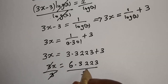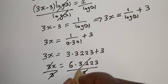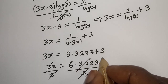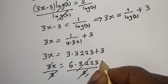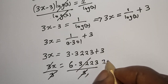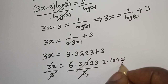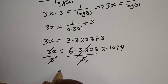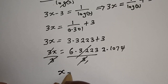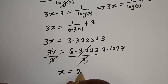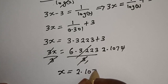Now let's divide both sides by 3. This will cancel, giving s is equal to 6.3223 divided by 3, which is 2.1074. So s is equal to 2.1074.